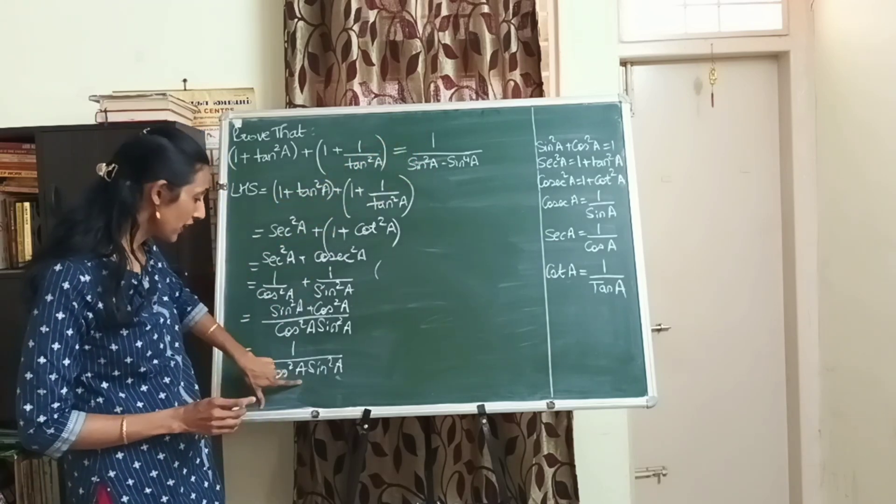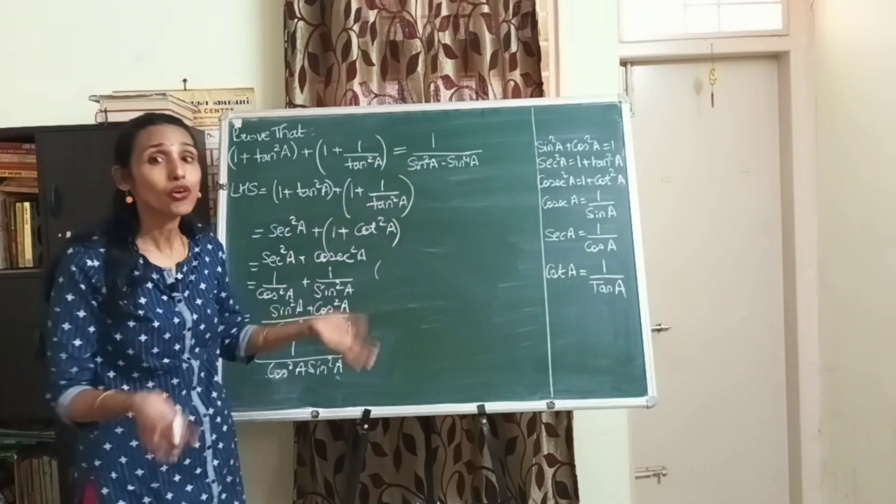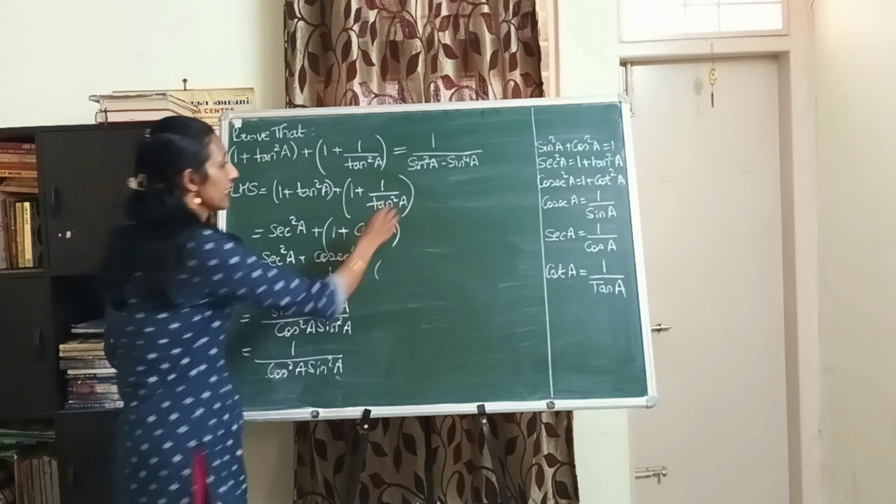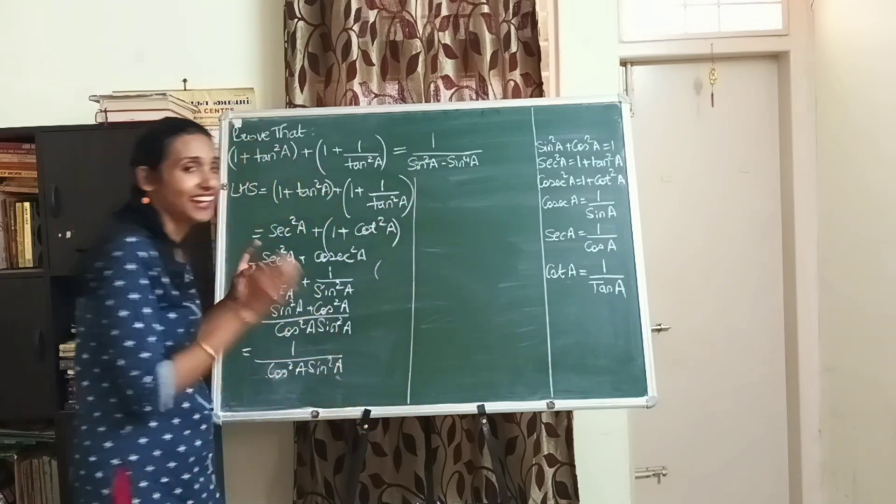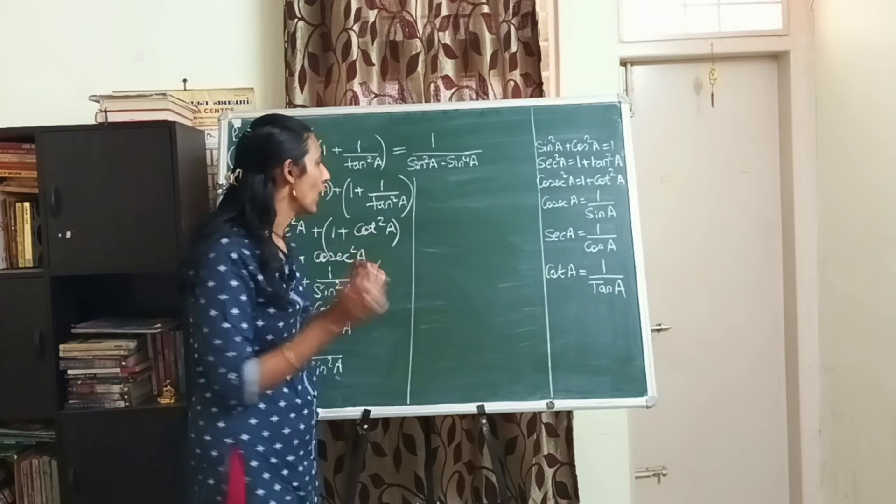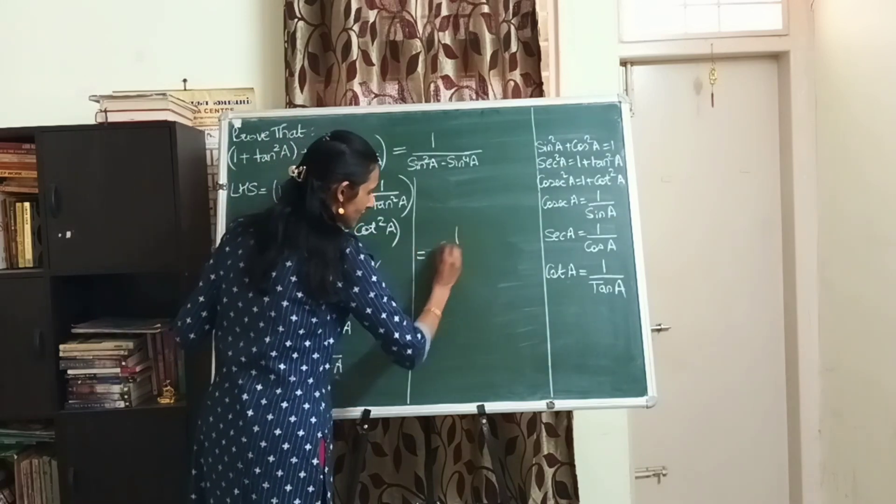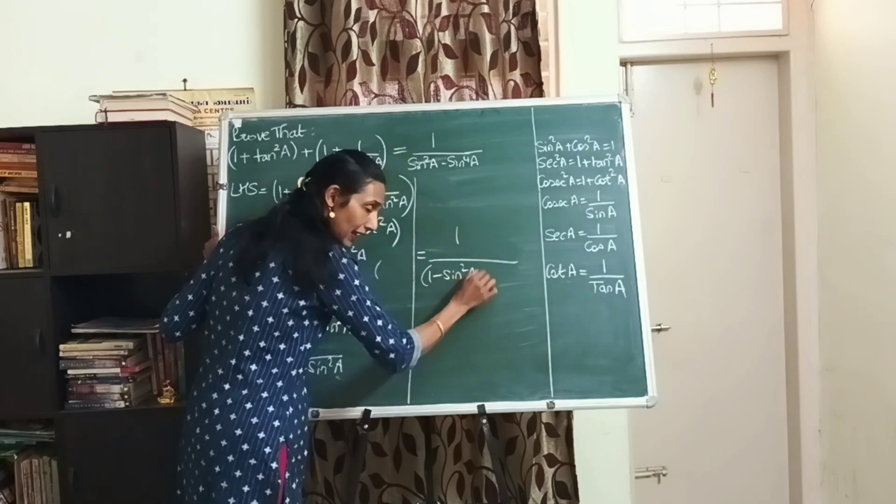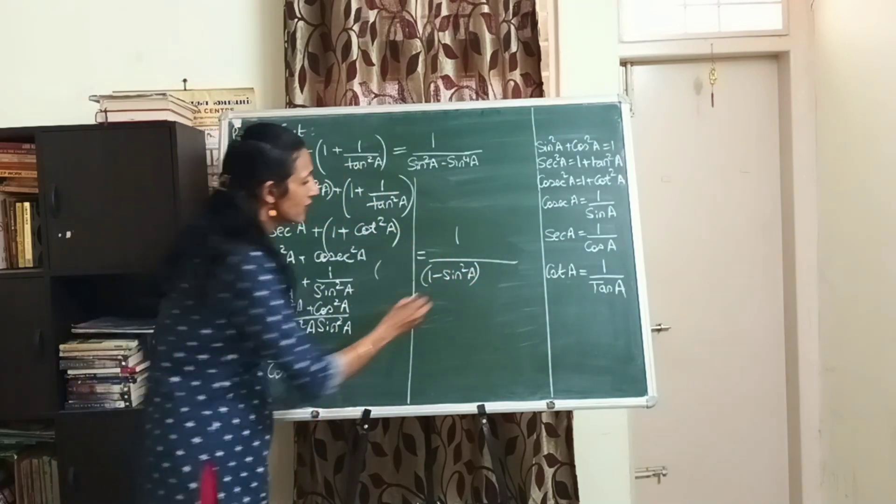The only thing I see is there is a cos square here, but in the RHS there is no cos at all. So now my next aim is how to get rid of this cos. What should we do? Exactly, we should substitute cos square a as 1 minus sin square a. So cos square a I will write as 1 minus sin square a into sin square a.